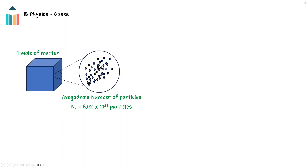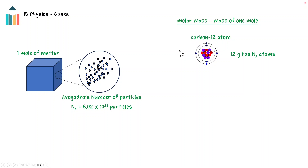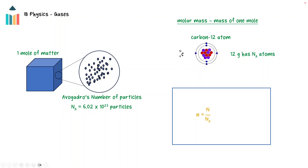The SI unit for amount of matter is the mole. A mole is the amount of matter that contains Avogadro's number, 6.02 times 10 to the 23, of particles. For example, a mole of water is 6.02 times 10 to the 23 water molecules. The molar mass is the mass of a mole of a substance. The molar mass of carbon-12 is 12 grams per mole, which is the mass of carbon-12 that contains Avogadro's number of carbon-12 atoms. A lowercase n is used for the amount of moles and the symbol capital N is used for the number of particles in a gas. These ideas are related through the formula where lowercase n equals capital N divided by NA, where NA is Avogadro's number.